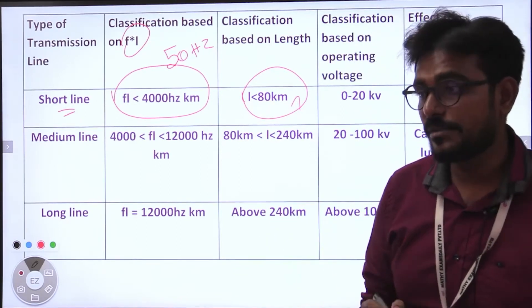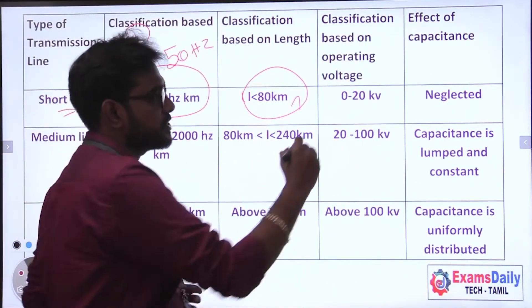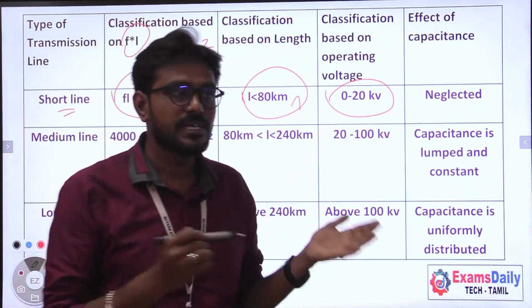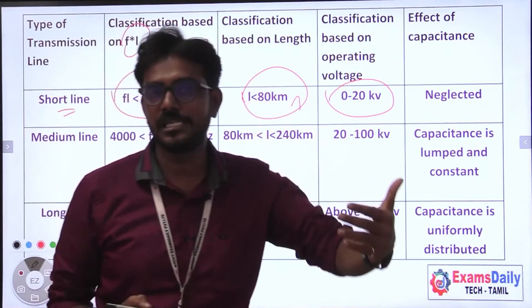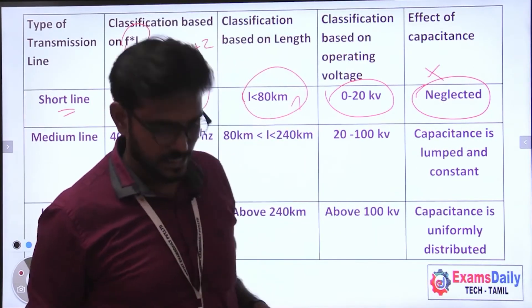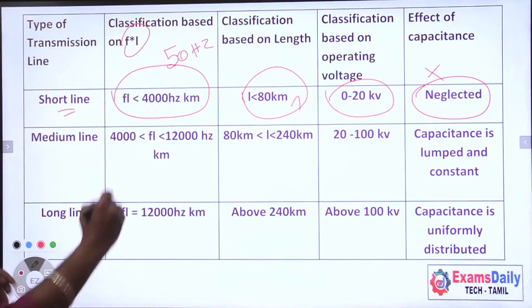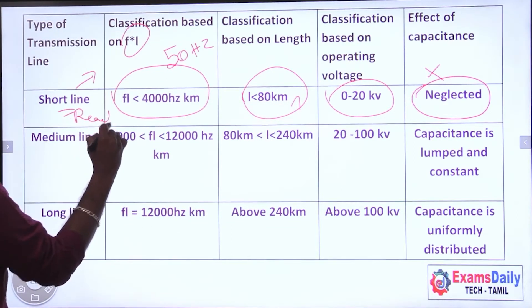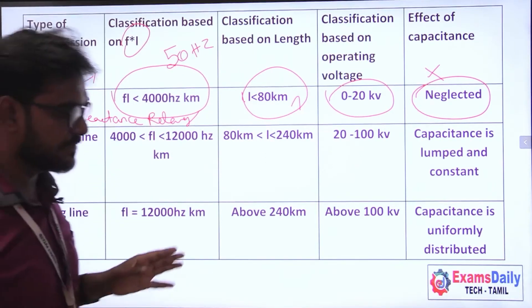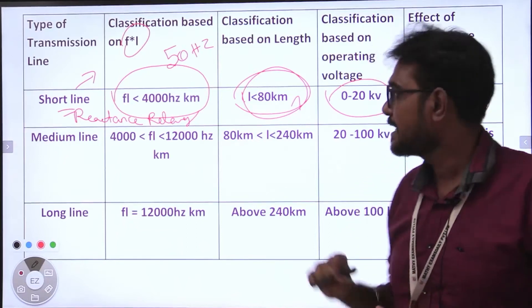A transmission line of length less than 80 km is a short transmission line. The kV rating for short transmission line is 0 to 20 kV. There is a capacitance effect, but in the short transmission line, capacitance is neglected.